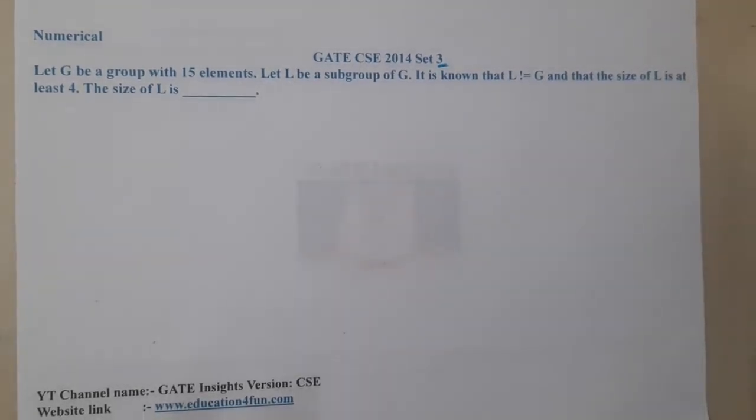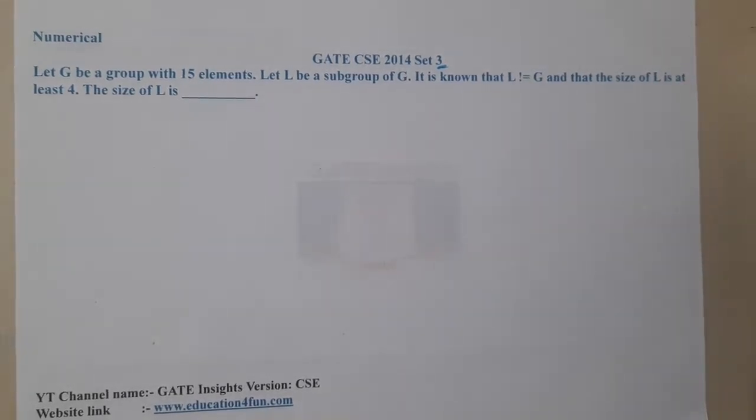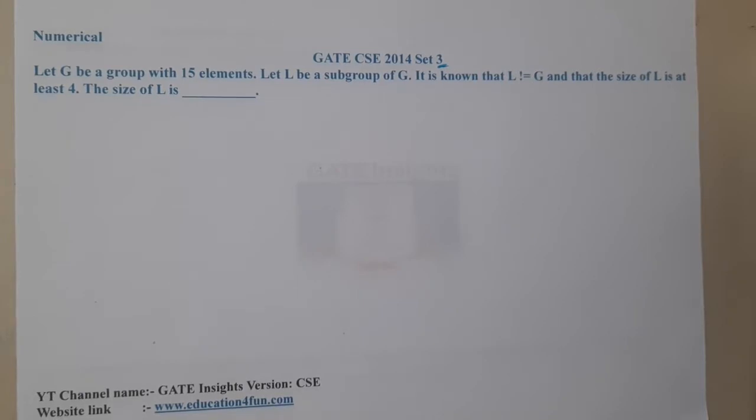15 elements. Let L be a subgroup of G. It is known that L is not equal to G, and the size of L is at least 4. Then the size of L is?